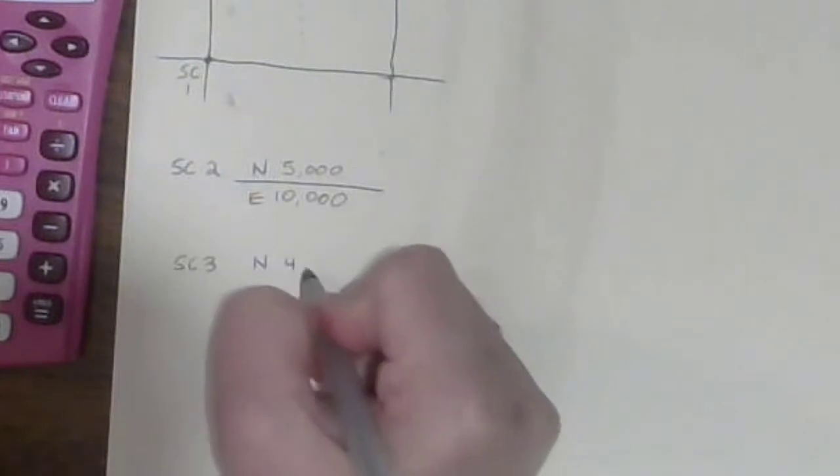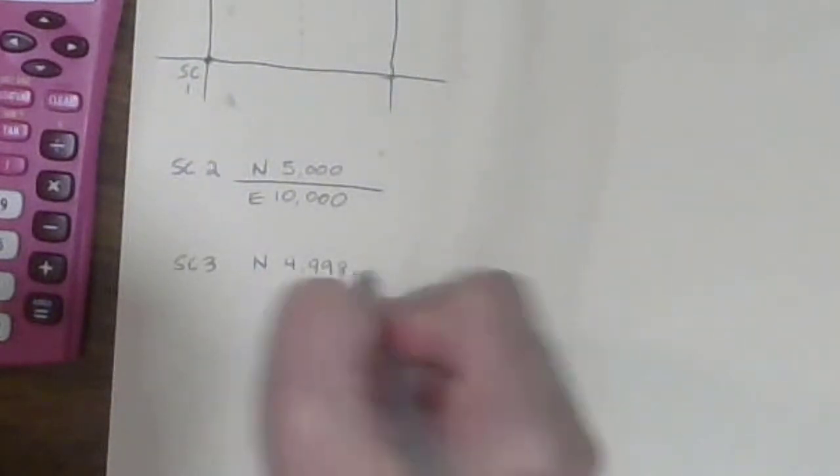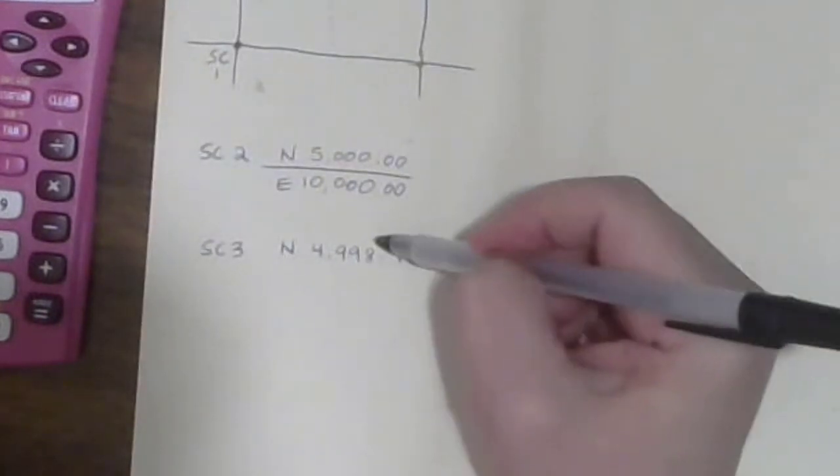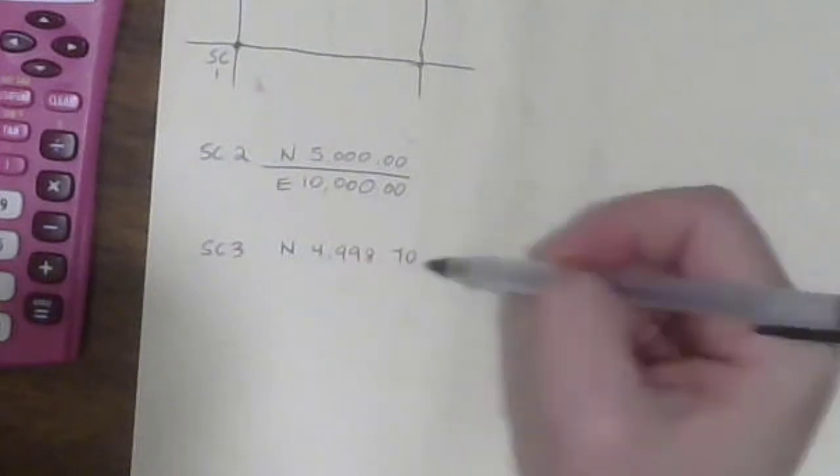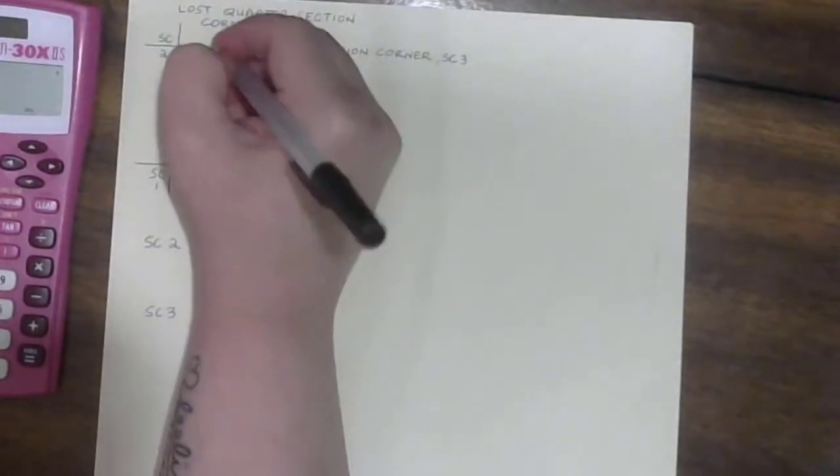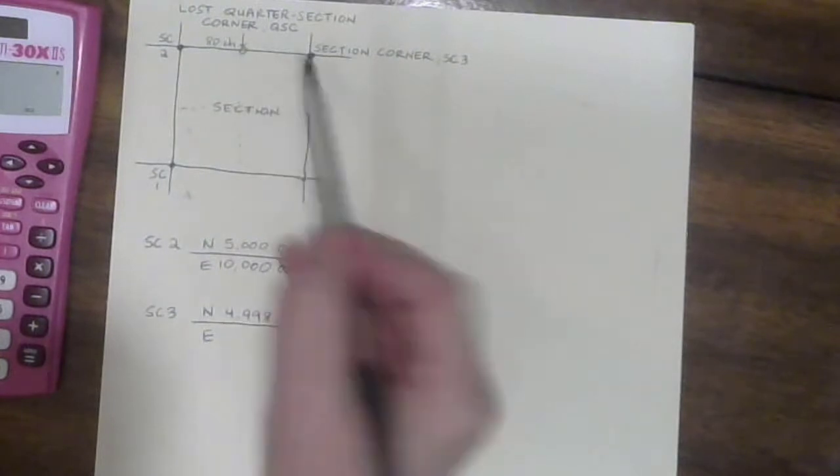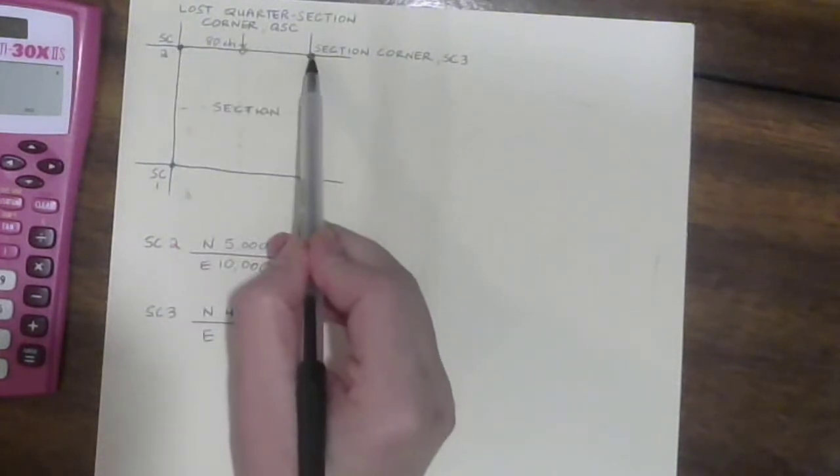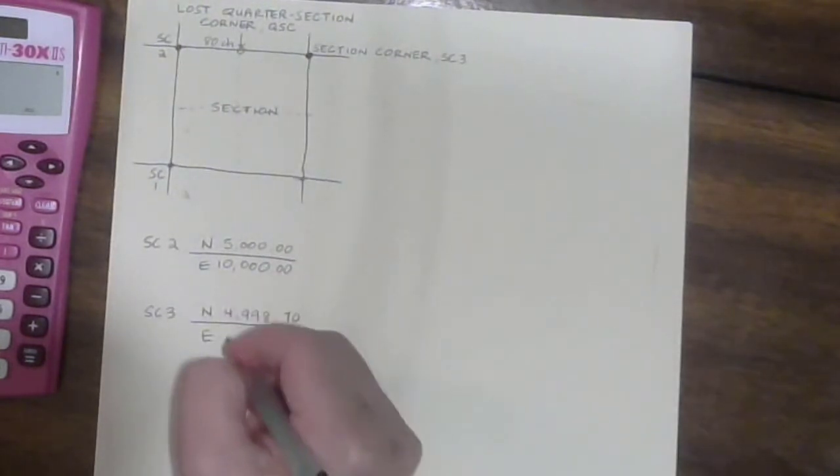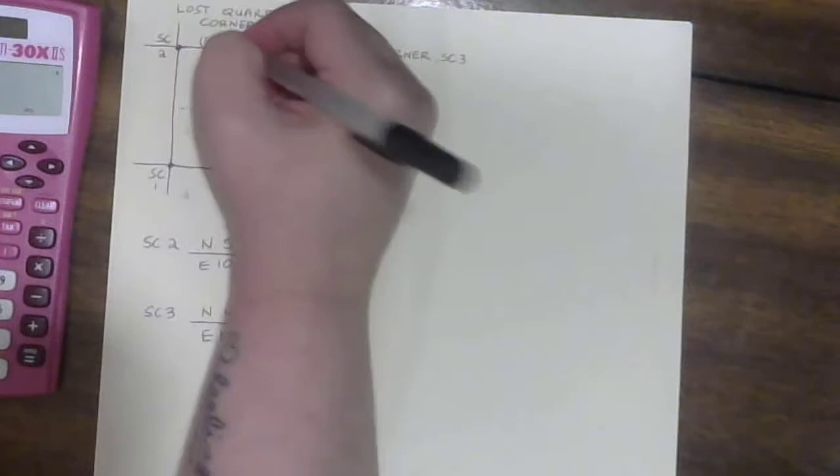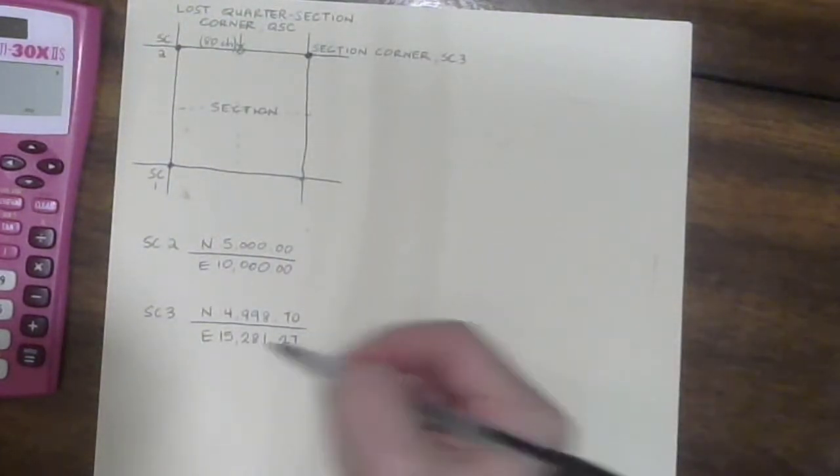...a northing of 4,998.70. Remember we've assumed one of them and then just based on that we know this length. Let's say that it's 80 chains on the map then it ends up being this and it has an easting. It should be one mile across so 5,280 feet more, so let's say it's 15,281.27. That's what we measured so it said 80 chains but it's not, it's actually a little bit more but pretty good for when it was first established.